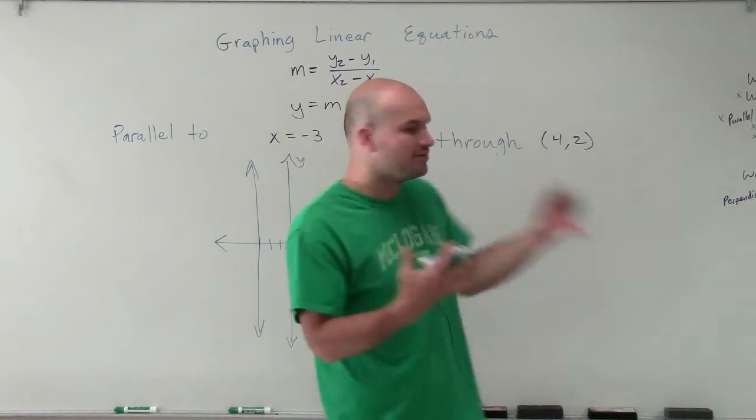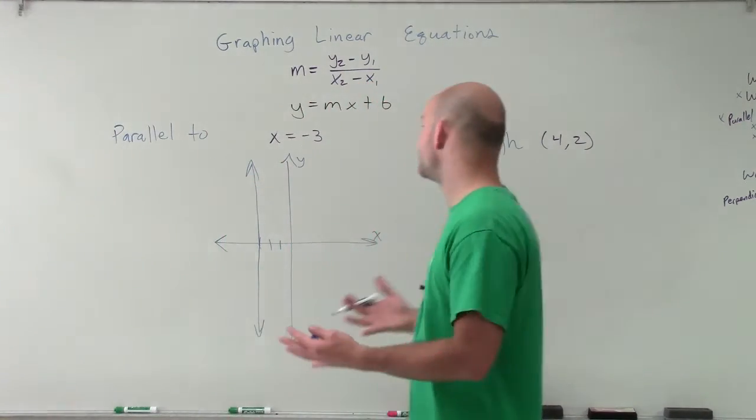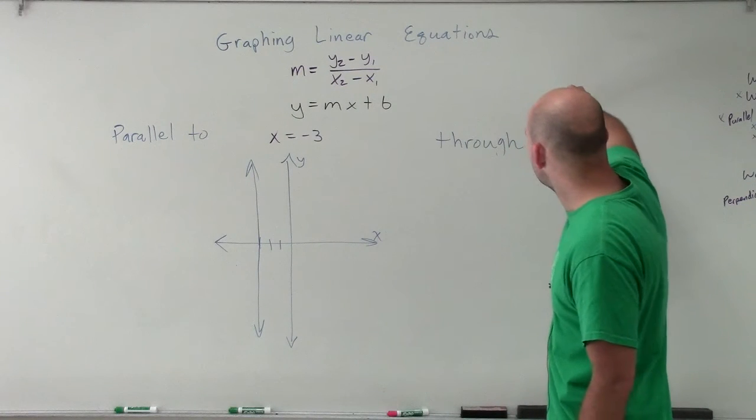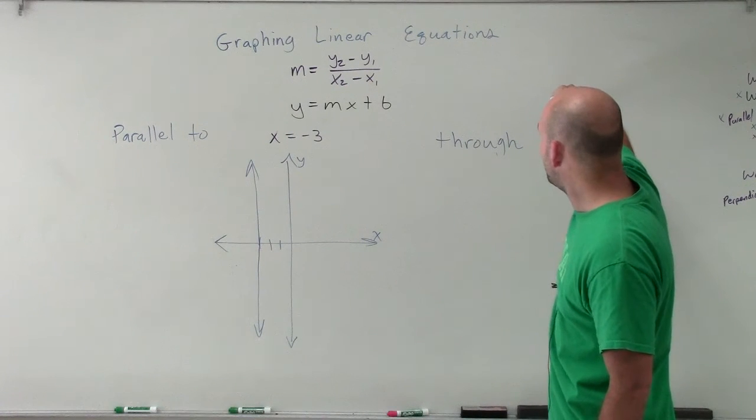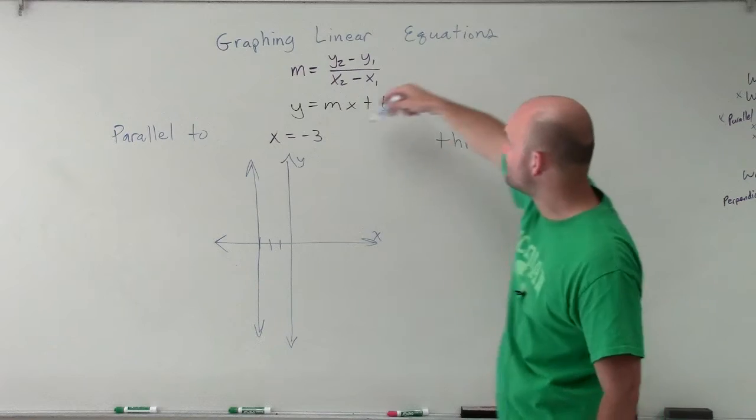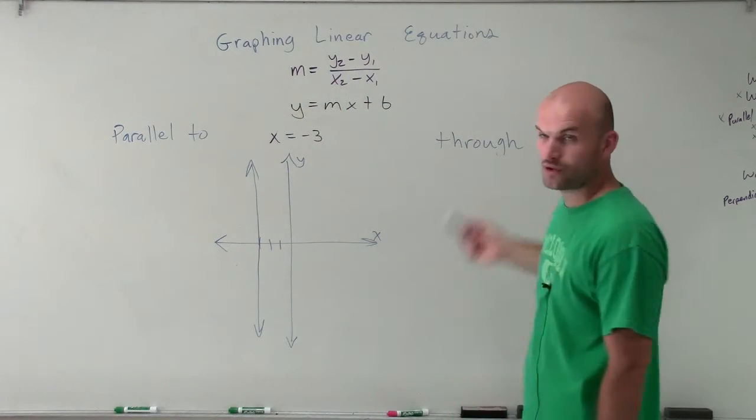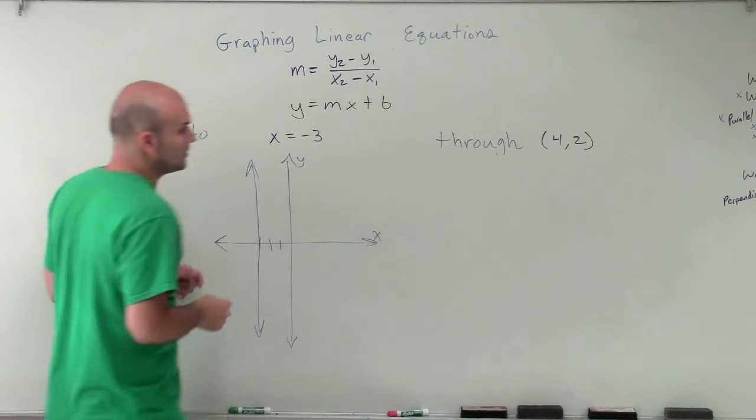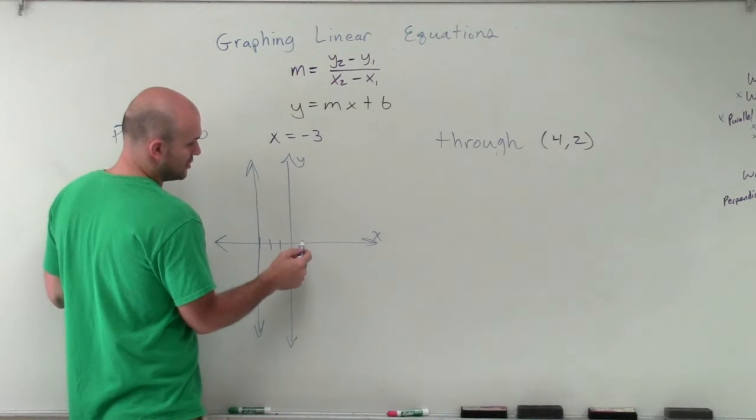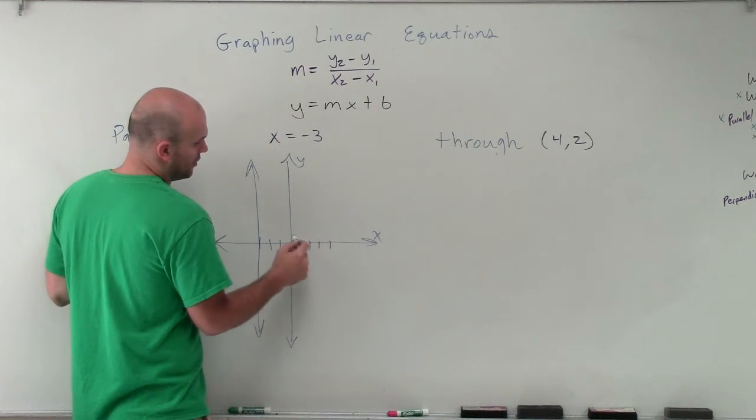Now, we can't plug in different points that it goes through. We can't plug in the point 4 comma 2, because we only have a value of x. And the point is 4 comma 2. So let's take a look at the point 4 comma 2 - it's going to be over here, 1, 2, 3, 4, up 2.